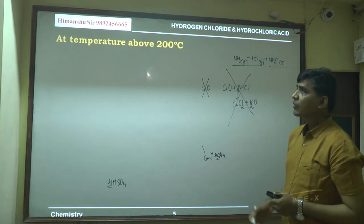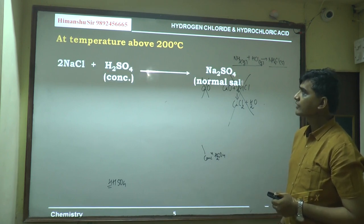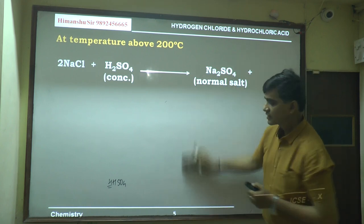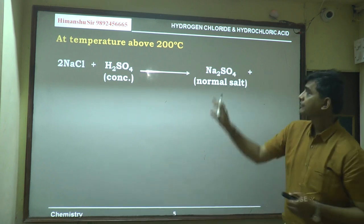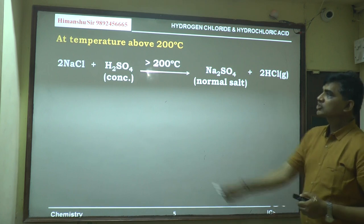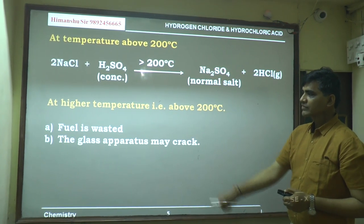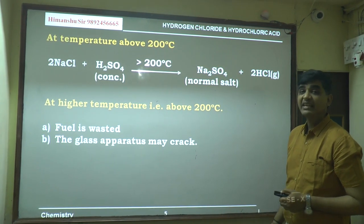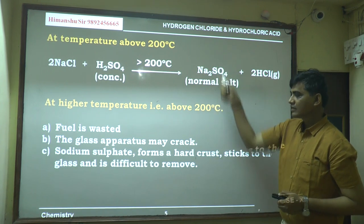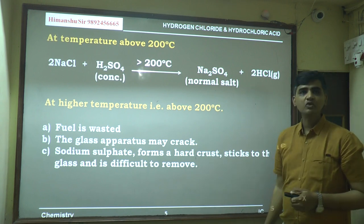At temperature above 200°C, the reaction of NaCl and H2SO4 gives Na2SO4 plus hydrogen chloride gas. At this higher temperature, fuel is wasted, the glass apparatus may crack or break, and sodium sulfate — a hard crust that sticks to the glass and is difficult to remove — is formed.